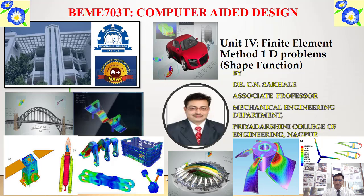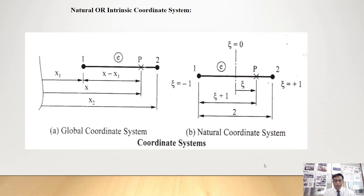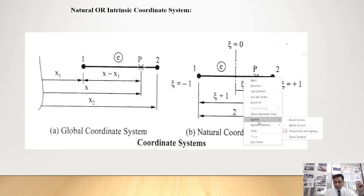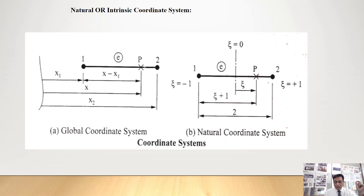Now we will learn the shape function. The shape function is used to interpolate the element. For this interpolation, let us see the natural or intrinsic coordinate system. Let us consider one element having a length L, with two nodes 1 and 2. This is the datum line.